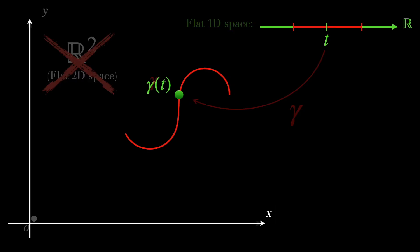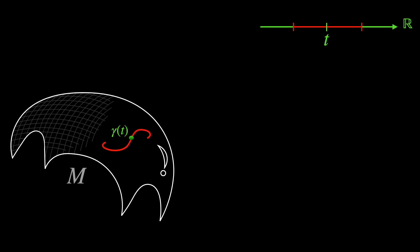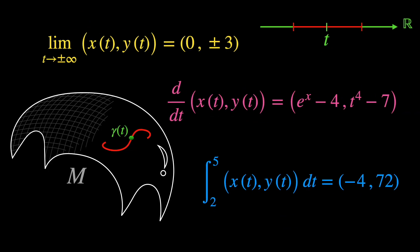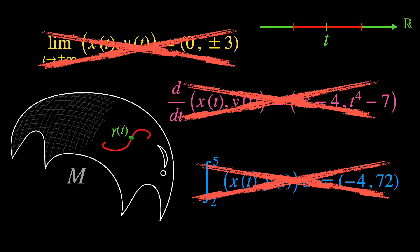But what if we tell you that actually, all of it is happening on a curved surface and that we just thought it was flat because we were too close to perceive the curvature of the space around us? Well, if this is true, then our situation really sucks because all the calculus we just did, namely limits, derivatives, integrals, etc., are just wrong.